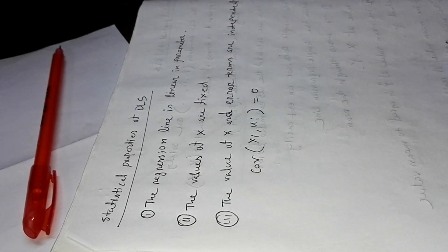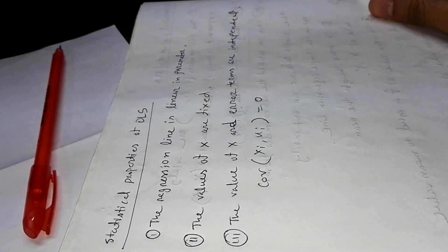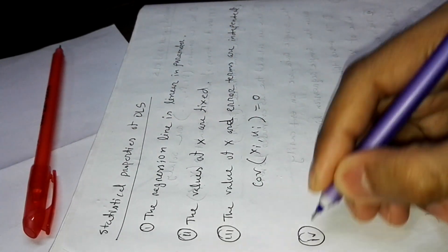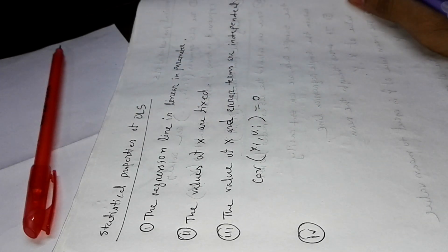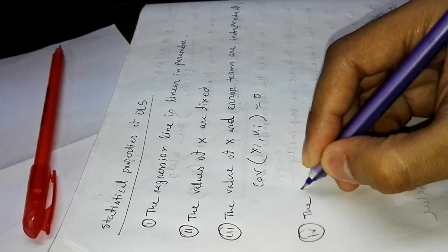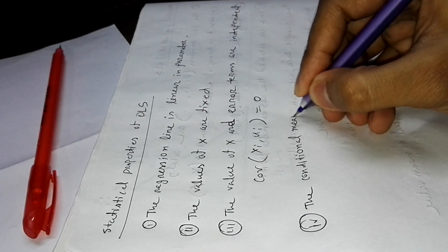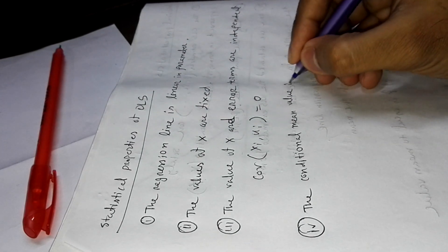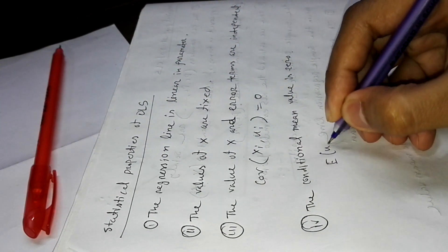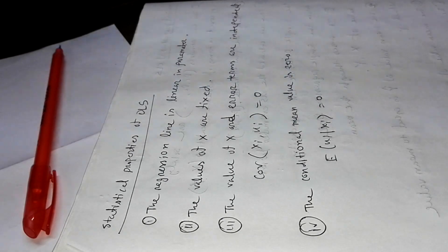The fourth property is that the conditional mean value is zero. That means E(ui | xi) = 0. So the conditional mean value is actually zero.